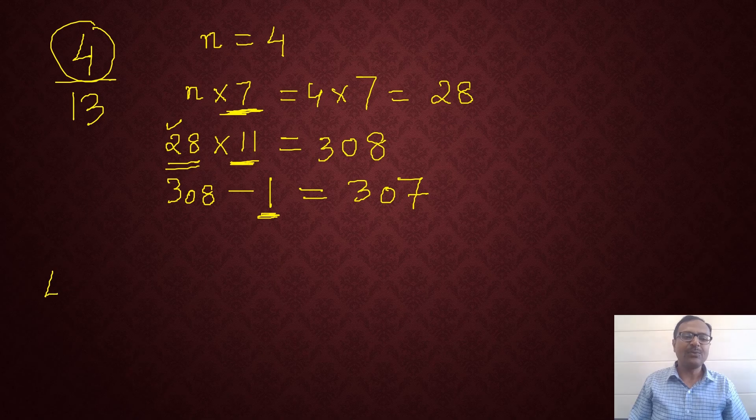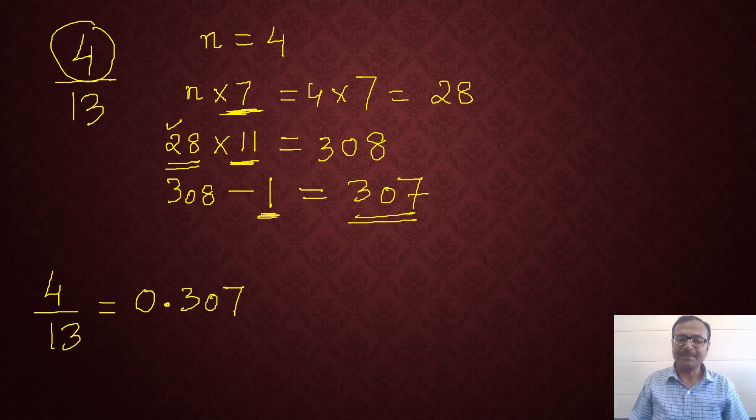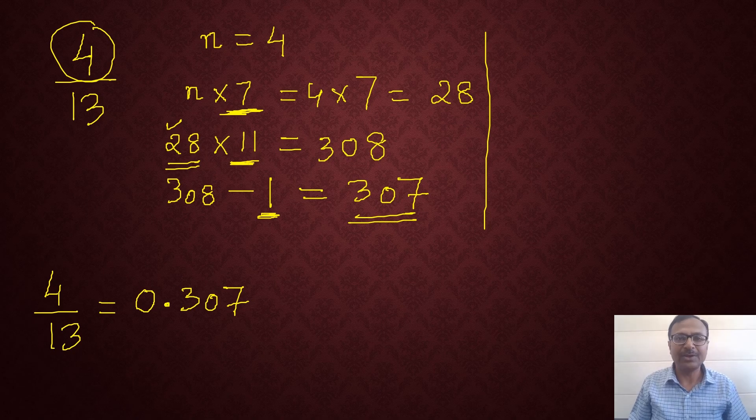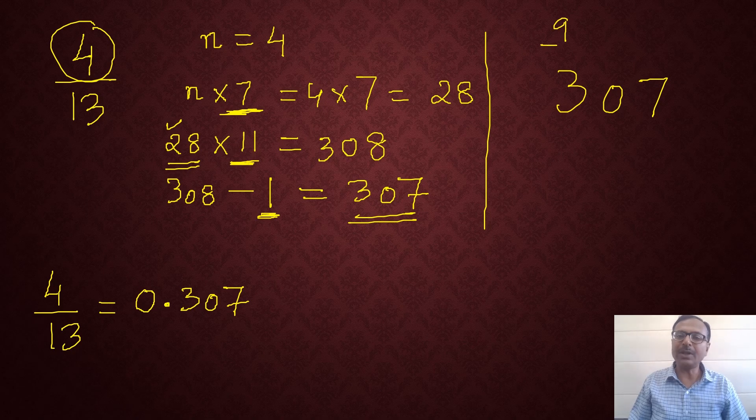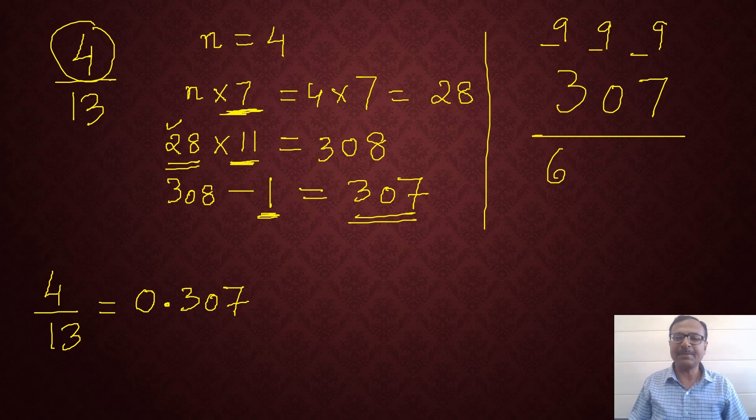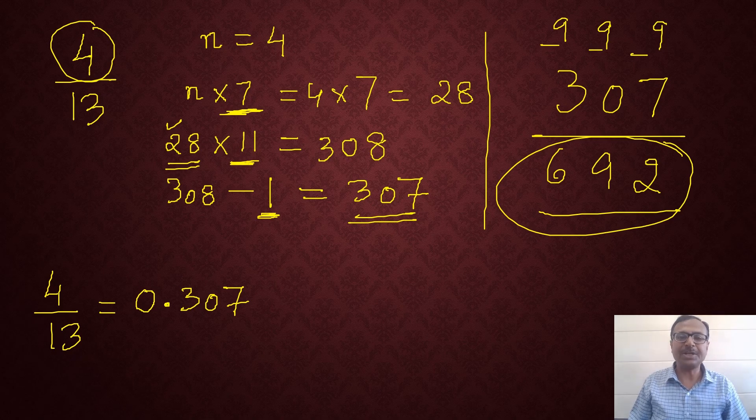And now, the amazing thing is 4 by 13 will be obviously 0 point something and that something will start with this number 307. After that, you have to just take the 9's complement of 307. You understand 9's complement? 307. You will subtract all the digits of this number from 9. So what do you get? 9 minus 3 is 6. 9 minus 0 is 9 and 9 minus 7 is 2. This number 692 forms the next 3 digits of the decimal representation of 4 by 13.